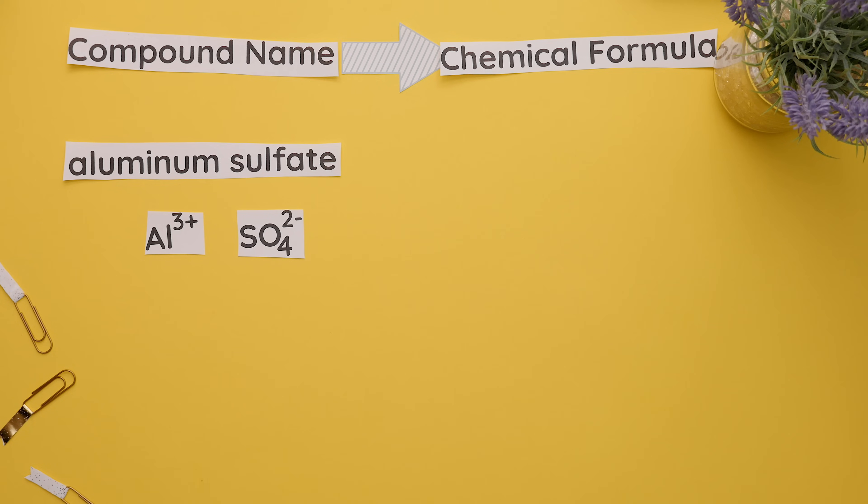Since this is an ionic compound, we must balance the charges. To balance the charges, the charge of sulfate now becomes aluminum's new subscript, and the charge of aluminum now becomes the new subscript for sulfate.